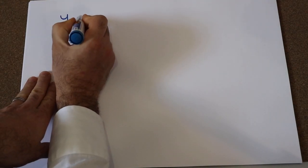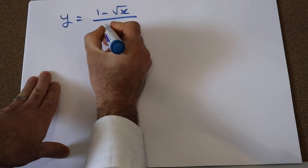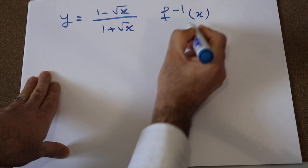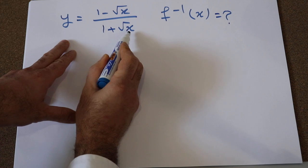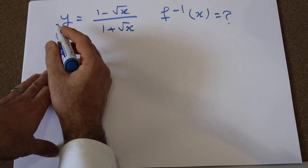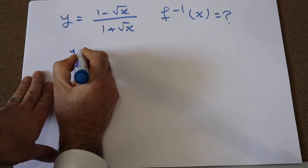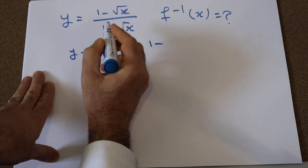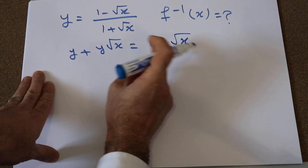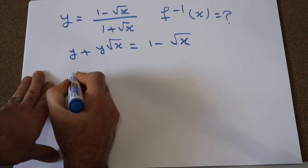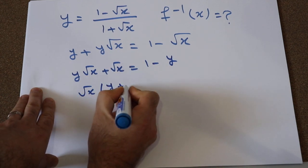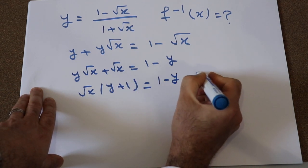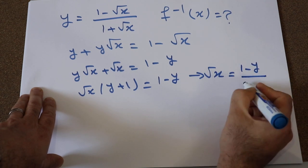Let me solve another example. If the function y is defined as (1 minus √x) divided by (1 plus √x), the question is what is the inverse of this function? Again, first express x in terms of y, then interchange x and y. Multiplying y by the denominator: y plus y√x equals 1 minus √x. Bringing the √x terms to one side: y√x plus √x equals 1 minus y. Factoring gives √x times (y plus 1) equals 1 minus y. Therefore, √x equals (1 minus y) divided by (1 plus y).